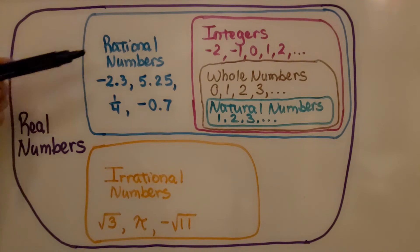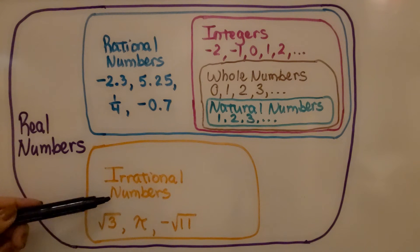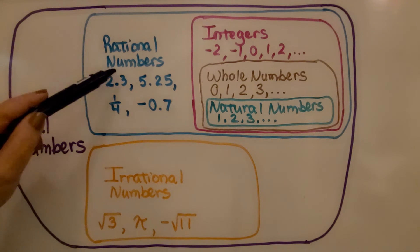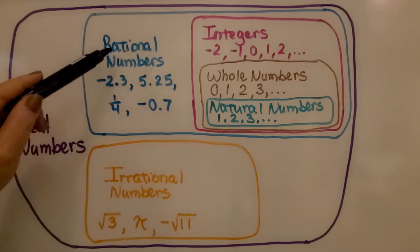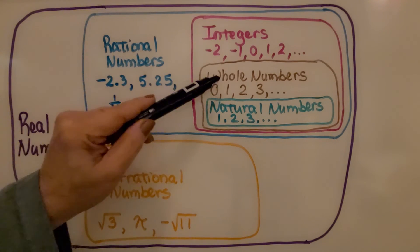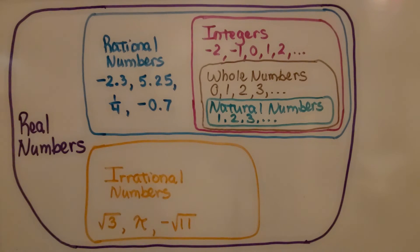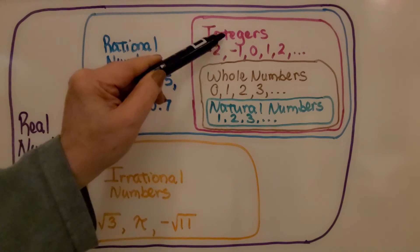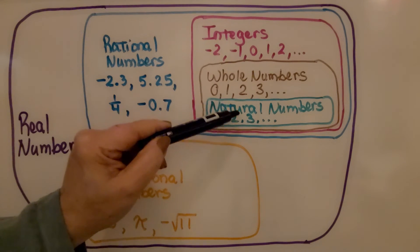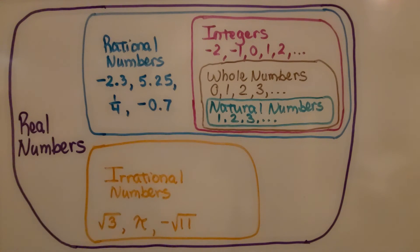In the set of real numbers, the subsets rational numbers and irrational numbers are included. For rational numbers, that includes integers, whole numbers, and natural numbers. For integers, that includes whole numbers and natural numbers, and whole numbers include natural numbers.